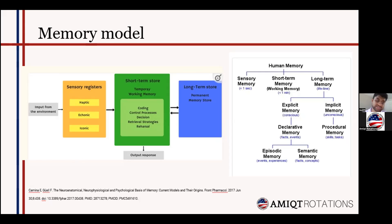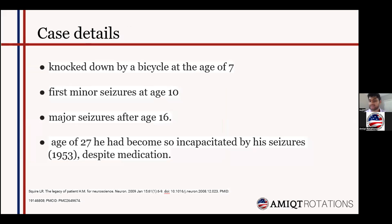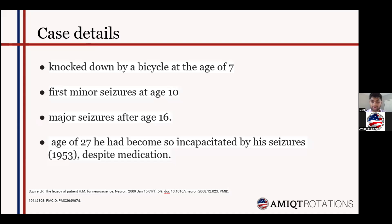HM was a mechanic who had suffered from minor epileptic seizures from when he was 10 years old, and began suffering severe seizures as a teenager. These may have been the result of a bicycle accident at the age of seven. His first minor seizure was at age 10 and major seizures occurred after age 16. By roughly age 27, he had become incapacitated by his seizures, and despite high doses of anti-convulsant medication, he could not work or lead a normal life.